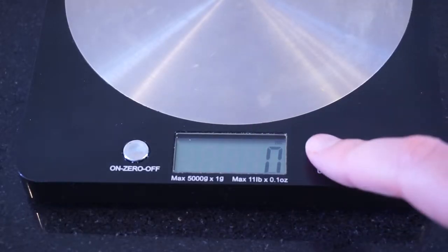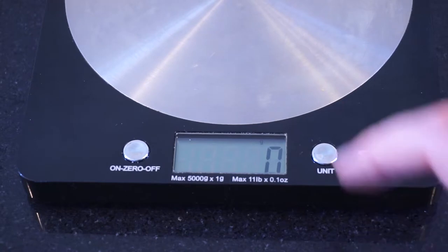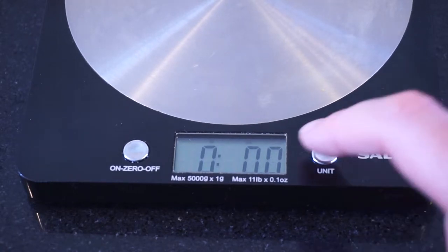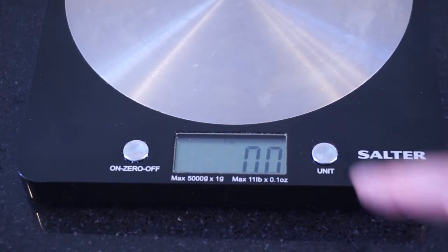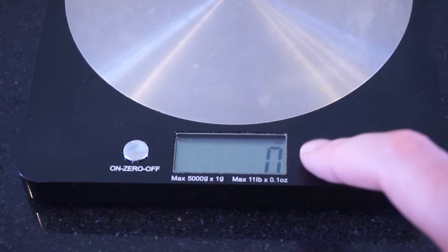So I have the unit set to milliliters here, but if you press the unit button you can do grams, pounds and ounces, fluid ounces, and back to milliliters.